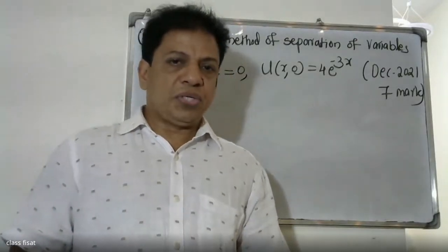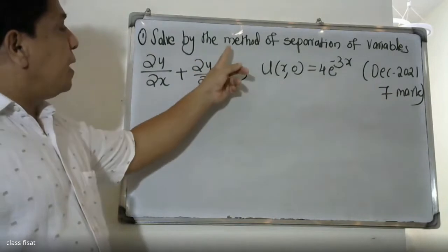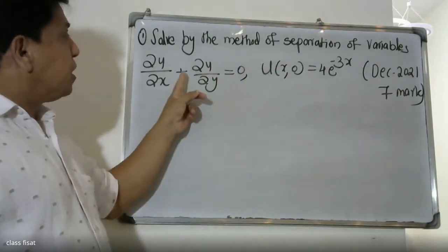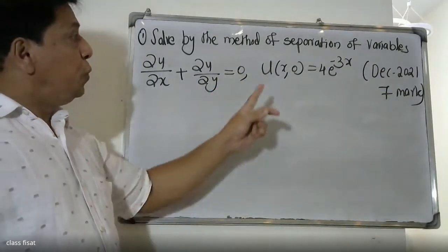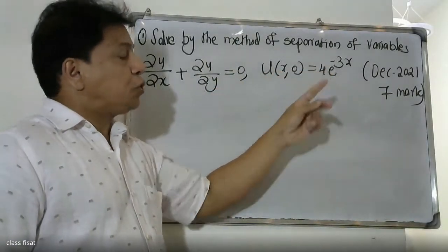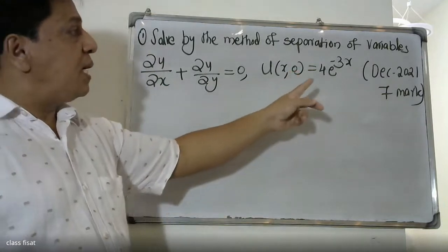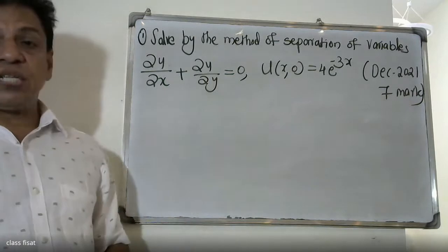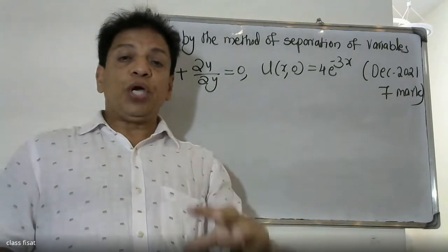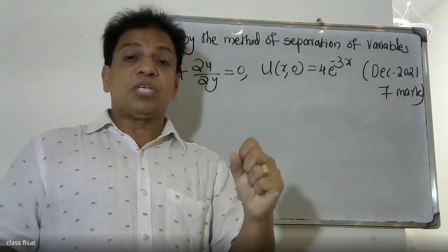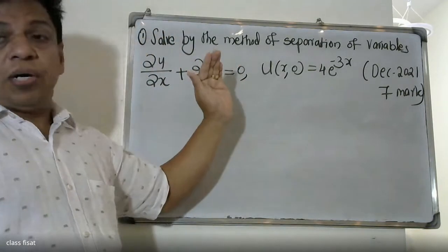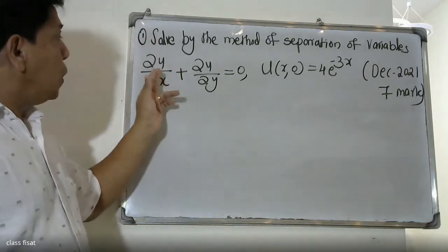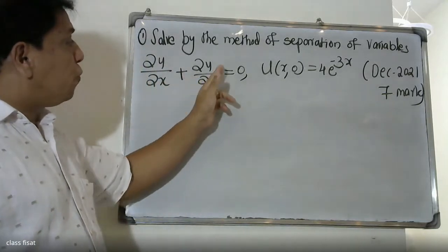Good morning students. The question is: why is the method of separation of variables used? The general problem is ∂u/∂x + ∂u/∂y = 0, with boundary condition u(x,0) = 4e^(-3x). We are going to solve this using the method of separation of variables.